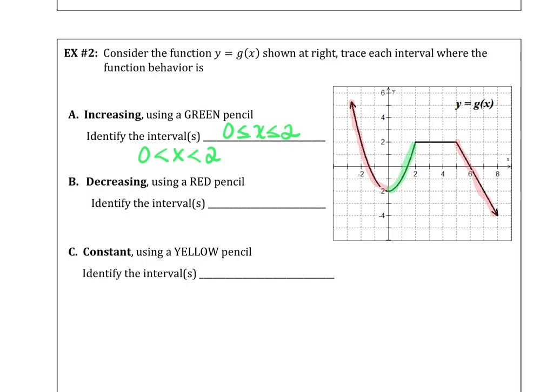So we're decreasing from negative infinity, which is never a bracket, up to 0. And we're decreasing from 5 to infinity. So if your teacher prefers the closed notation at the endpoint, we could be closed at 5 and open at infinity.